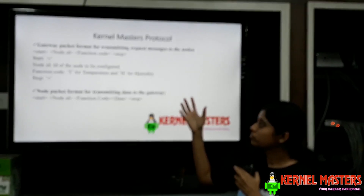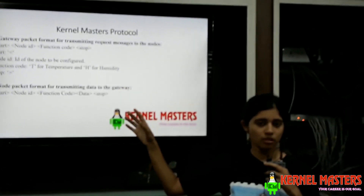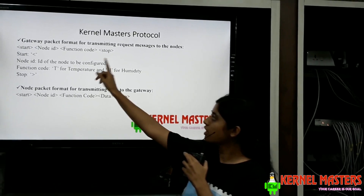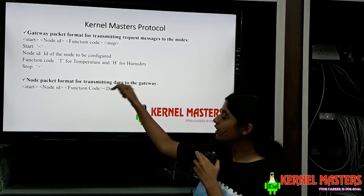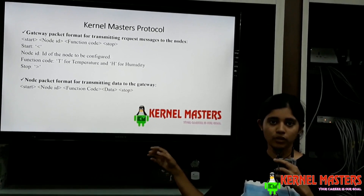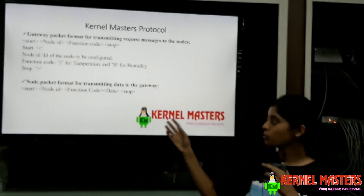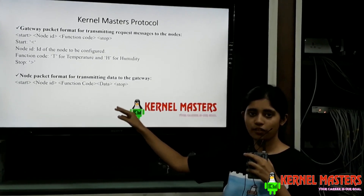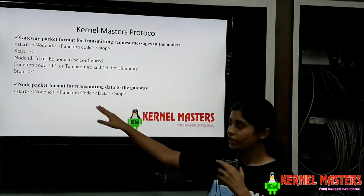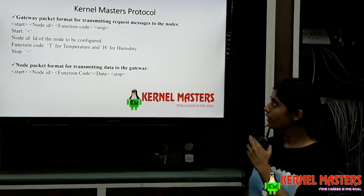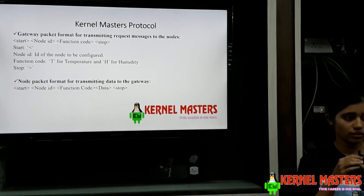For example, if the gateway wants to request node 1 to calculate its temperature, the gateway will send the start character, 1, T, and then the ending character. The node on receiving it will check its node ID — if it is 1, it will read the function code. If the function code is T, it will take the temperature value and then send back the start character, 1, T, the temperature value, and then the stop ending character. This is the packet format for sending and receiving temperature and humidity data.